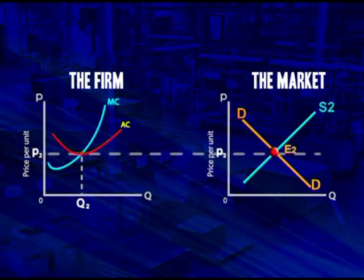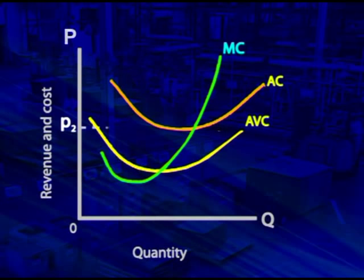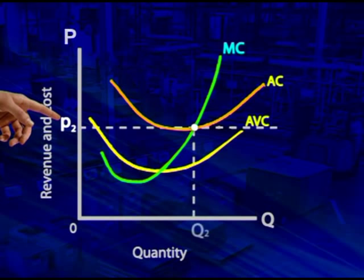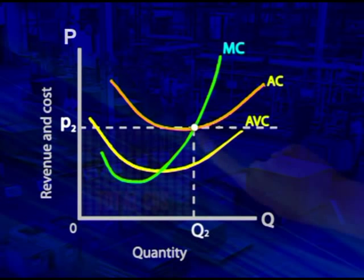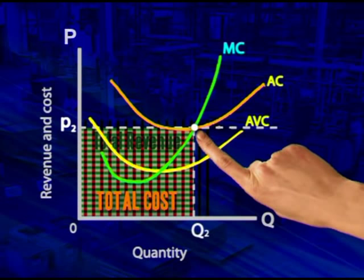When our firm makes normal profits at a price of P2, things will continue like this indefinitely. The market is in equilibrium, and the firm is in equilibrium, so there's no pressure for anything to change.